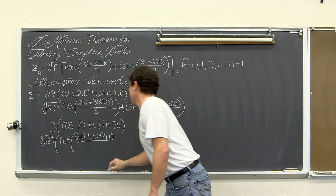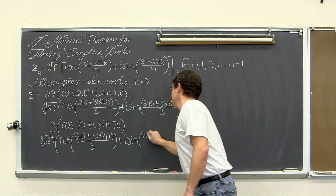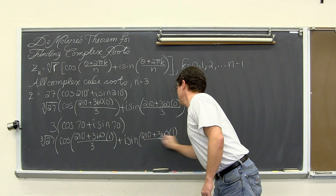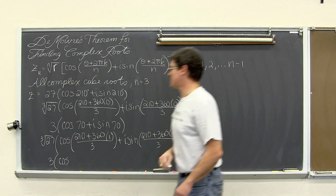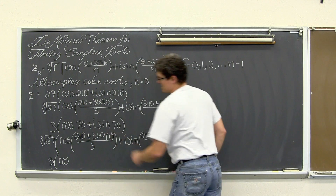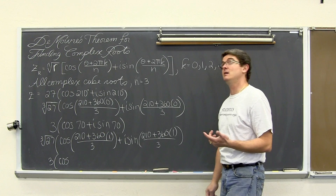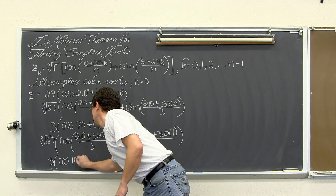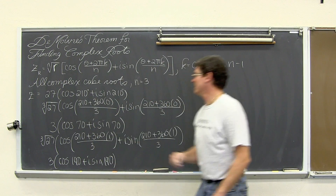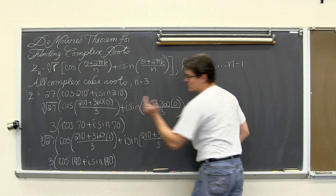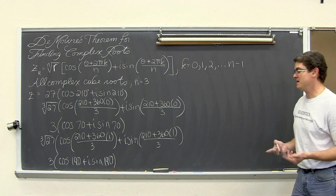Now for k equals 1: 360 times 1 divided by n, which is 3, plus i sine of 210 plus 360 times 1, again over 3. We get 3 times the cosine of — 210 and 360 gives 570, divided by 3 is 190. So we have a second root: 3 times the cosine of 190° plus i sine of 190°.